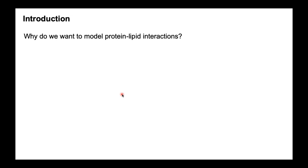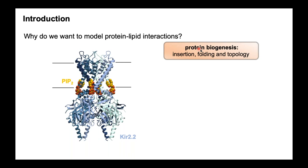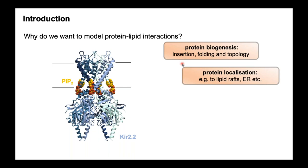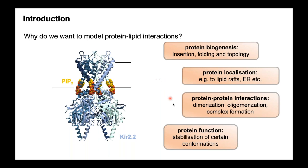Why do we want to model protein-lipid interactions? I mean specific lipid interactions — when a particular lipid, such as PIP2 shown here in yellow, binds to a defined binding site region on the surface of a protein of interest, such as the Kea 2.2 ion channel. These interactions are typically quite long-lived, on microsecond timescales and above, and they can have a number of profound effects on the protein. They are important in the biogenesis of the protein, how it inserts and folds in the membrane, how the protein is localised within the cell, and they help mediate protein-protein interactions — dimers, oligomers and complexes. They can also directly impact protein function; for example, PIP2 binds to the Kea channel and stabilises its open conformation.